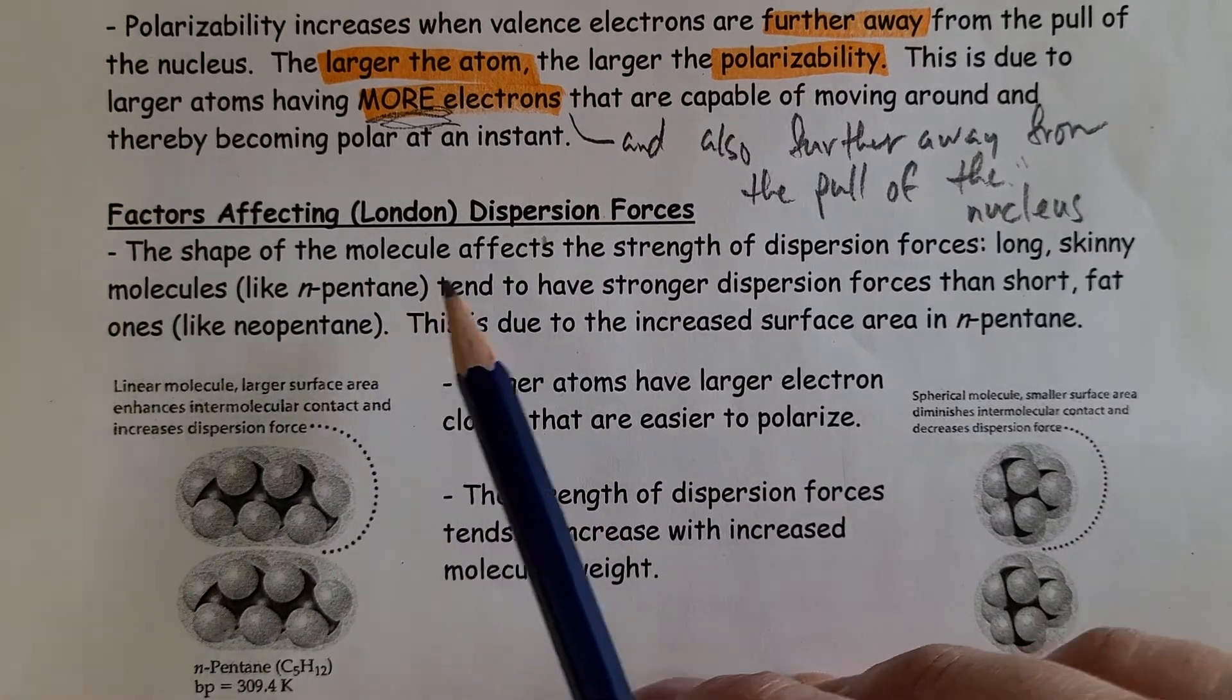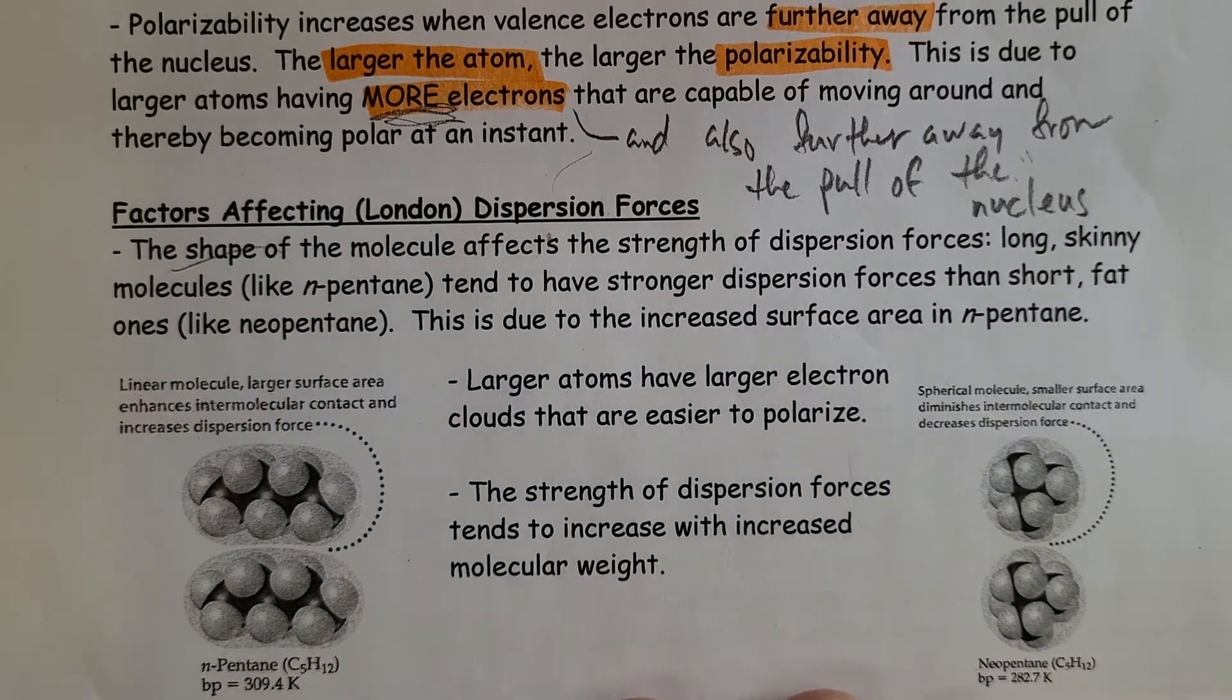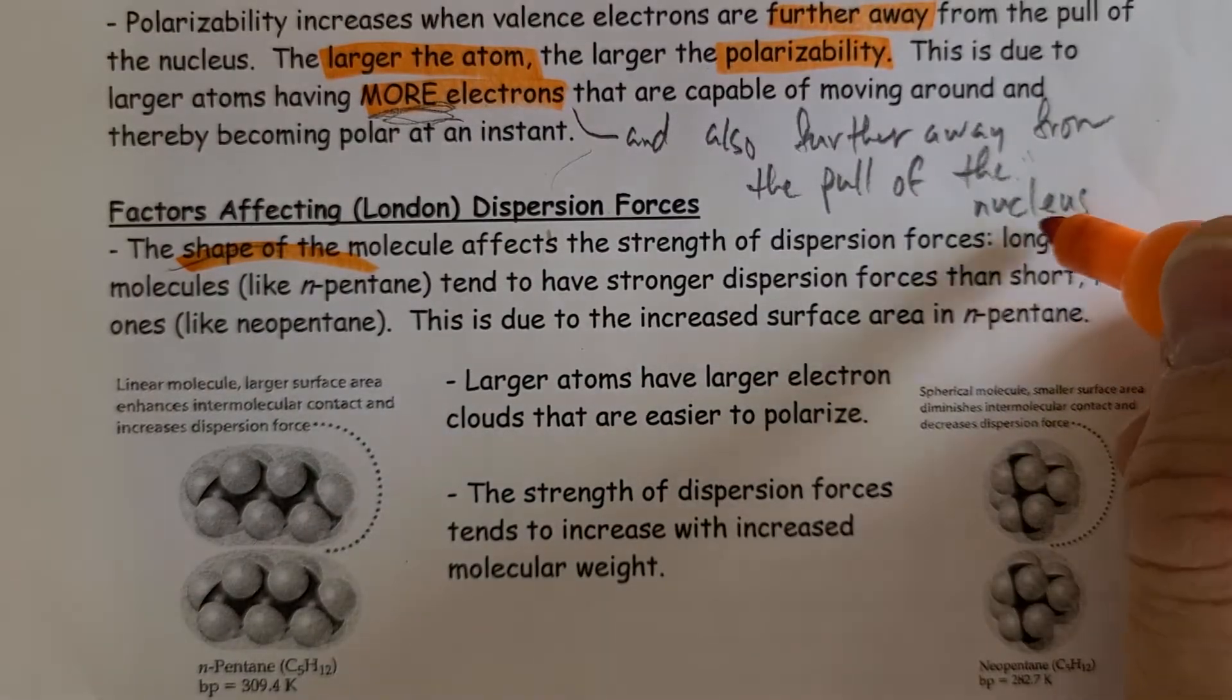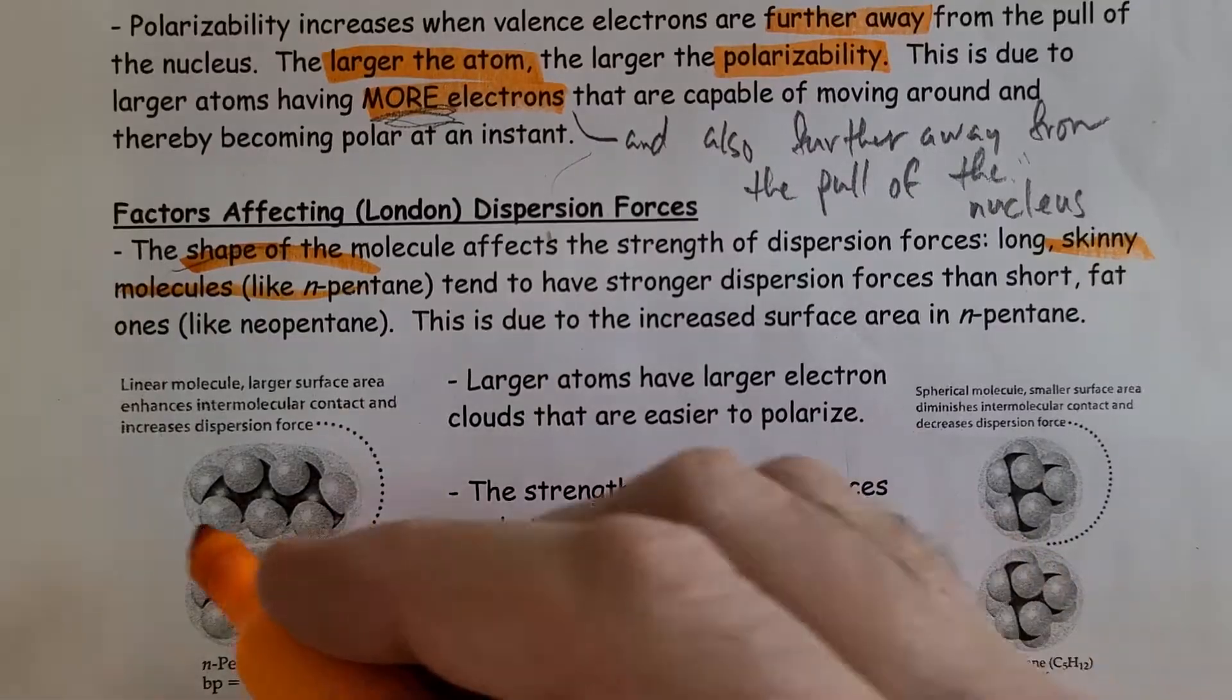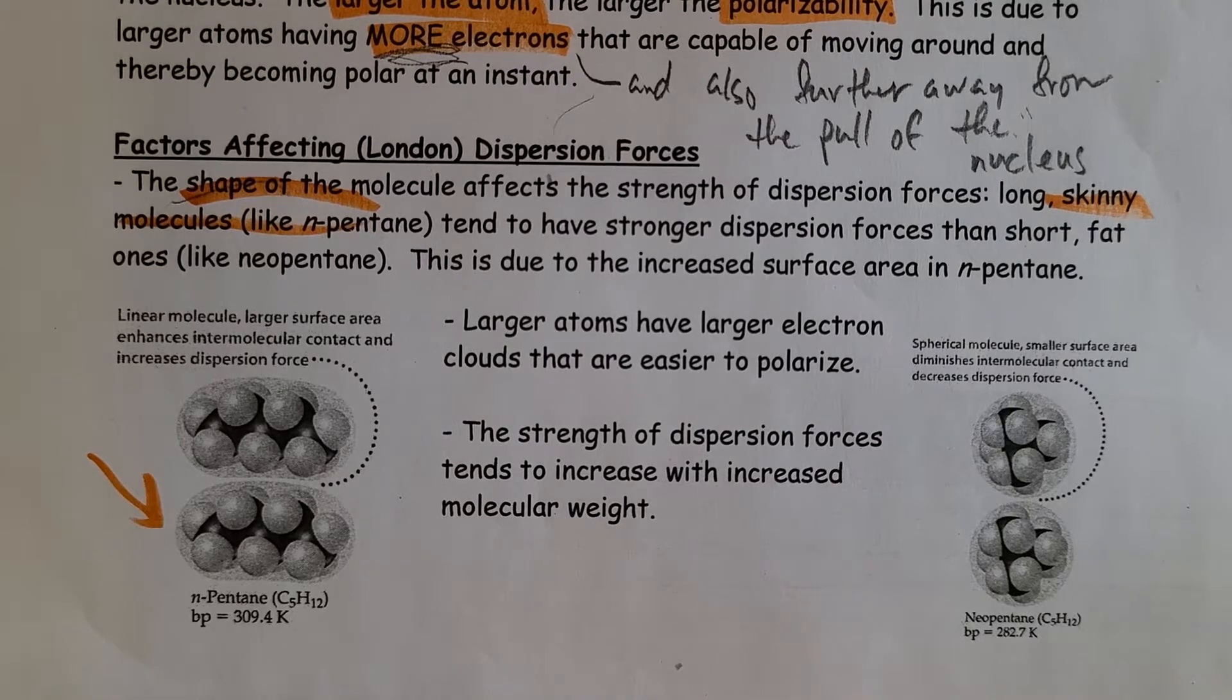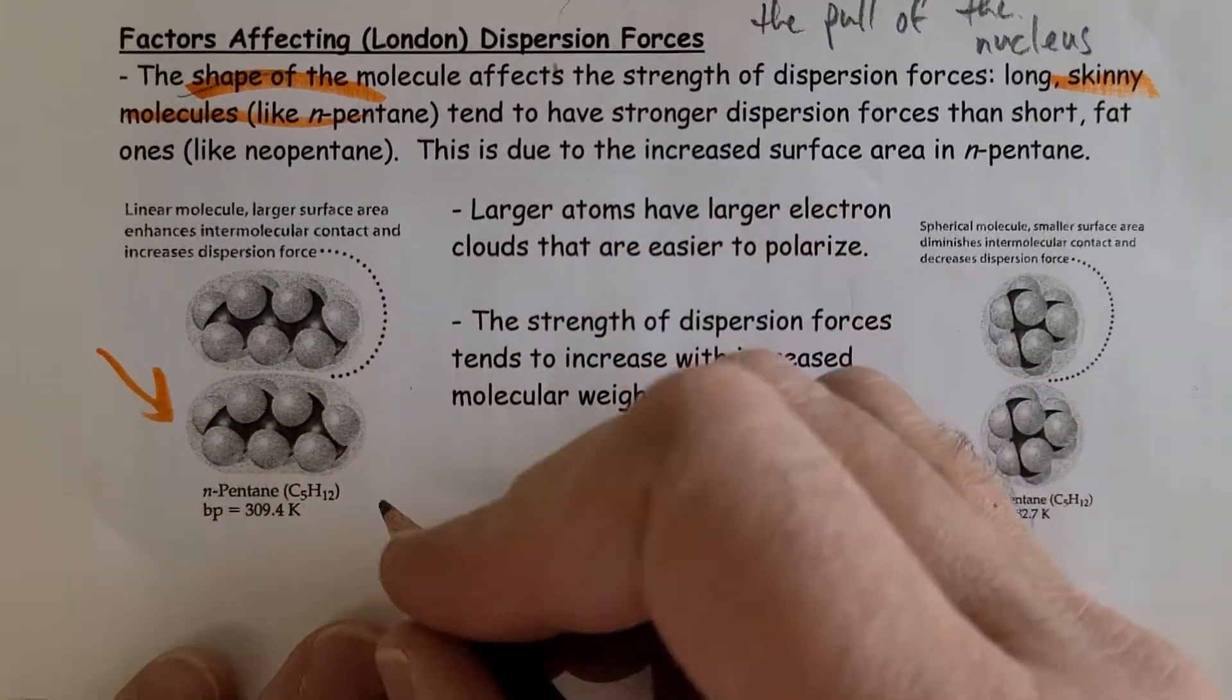Factors affecting London dispersion forces: the shape of the molecule also plays a factor. If we have a long skinny molecule, such as the one you see down here, that tends to be more polarizable than, let's say, a spherical molecule.